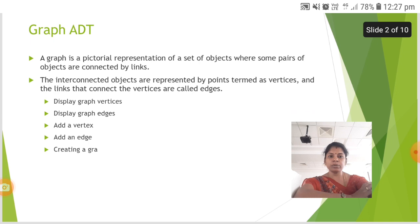So first we are going to see about graph ADT. A graph is a pictorial representation of a set of objects where some pairs of objects are connected by links. The interconnected objects are represented by points termed as vertices and the links that connect the vertices are called edges.